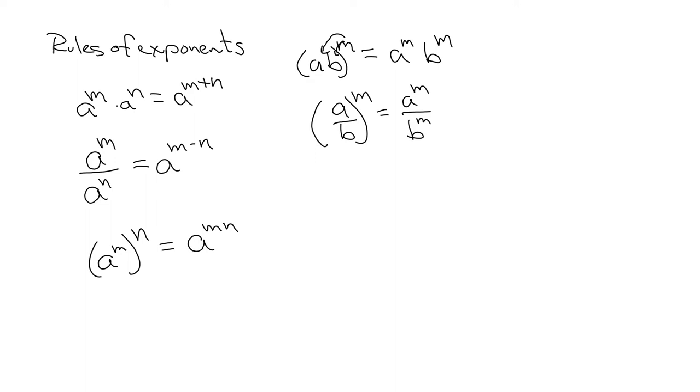When we have a negative exponent, a to the negative m, it's just equal to 1 over a to the m. If it's negative in the numerator, it becomes positive in the denominator. The same thing holds true if it's negative in the denominator. It goes up and becomes positive.